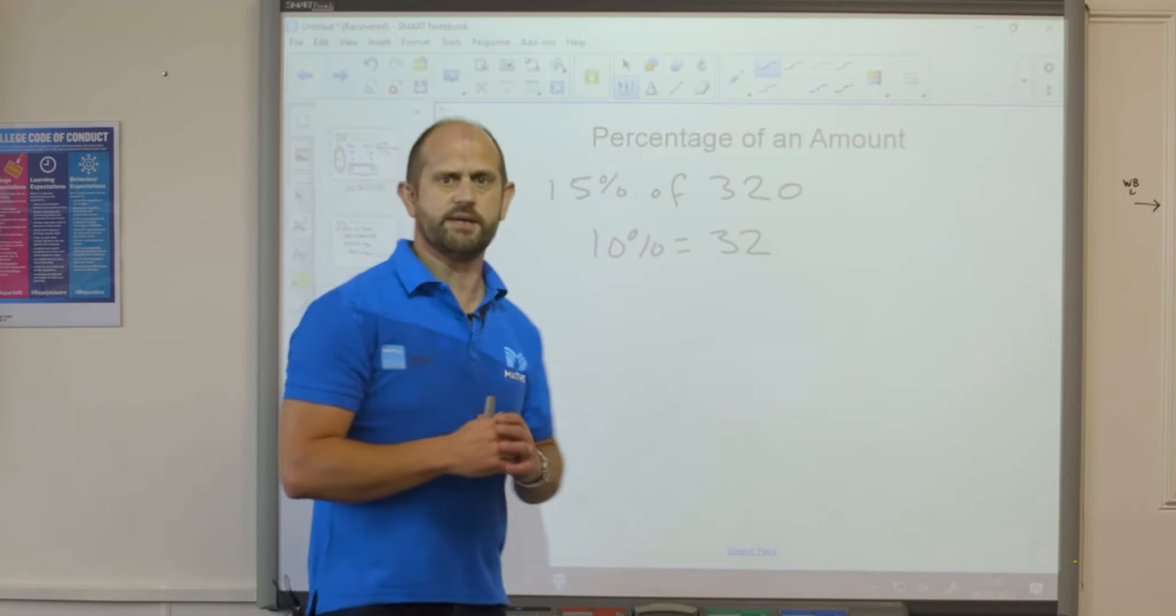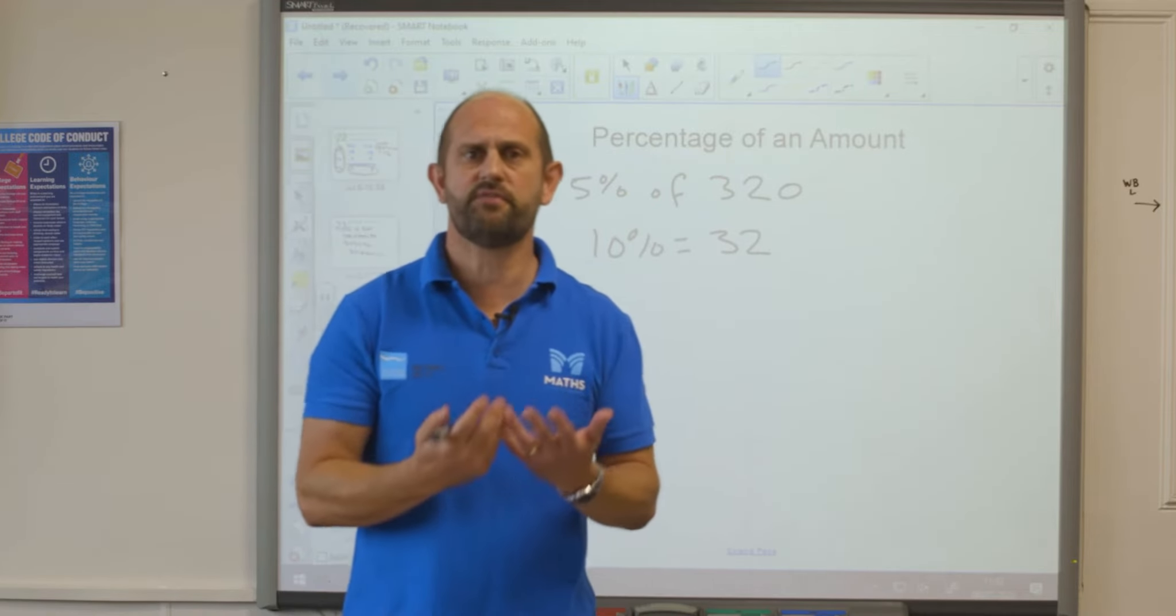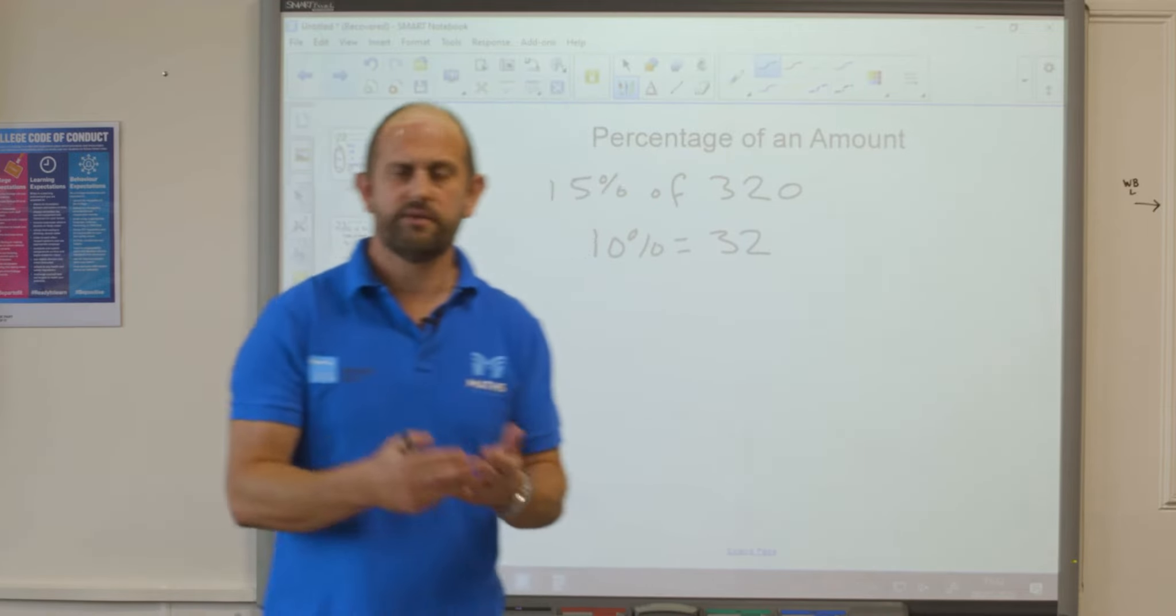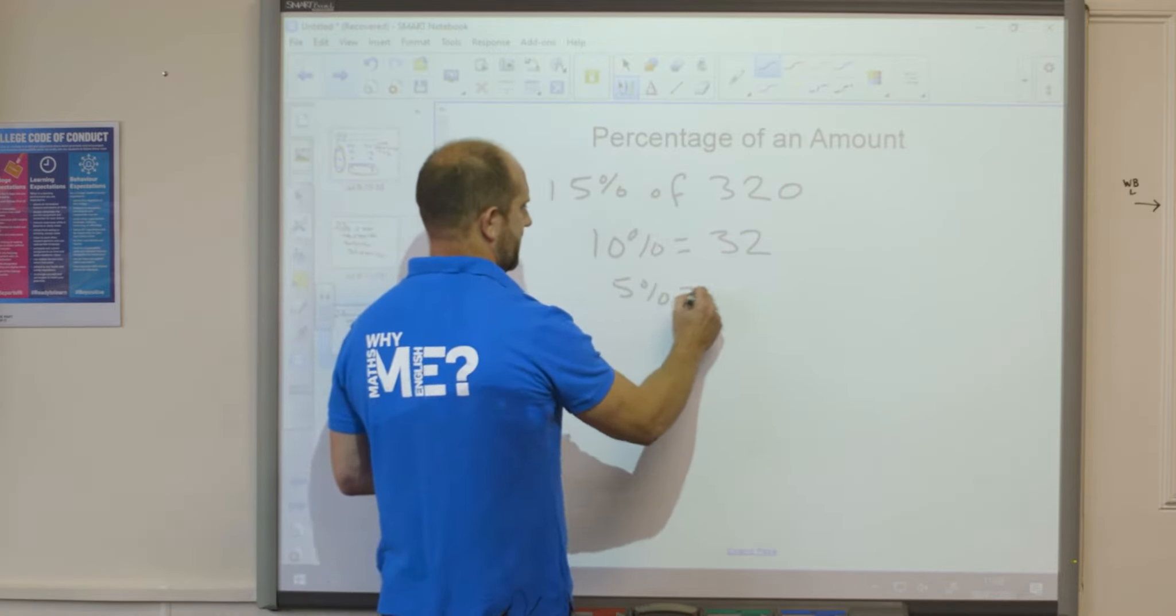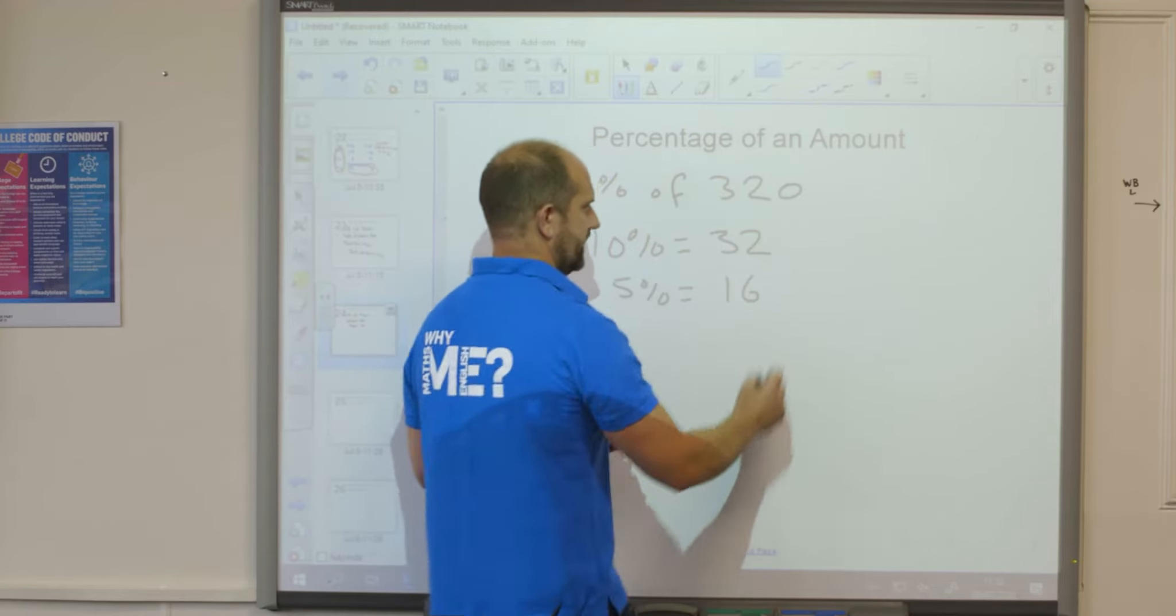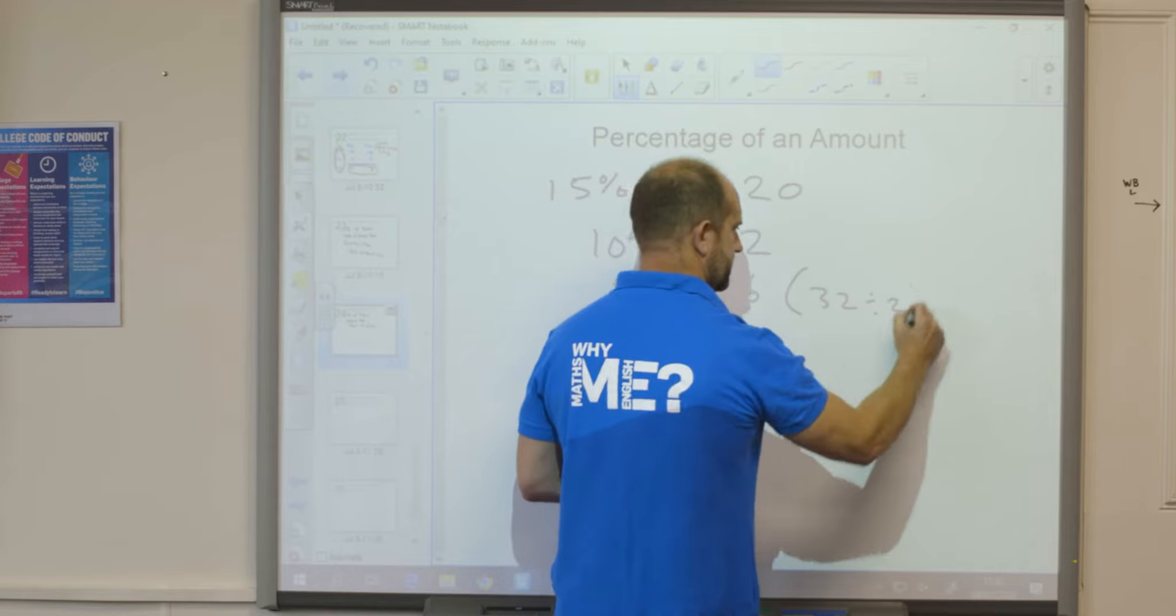Now I need to find 5%. Well 5% is half of 10%. So if I half 32 then I'm going to find what 5% is. So therefore 5% equals 16. That's 32 divided by 2.